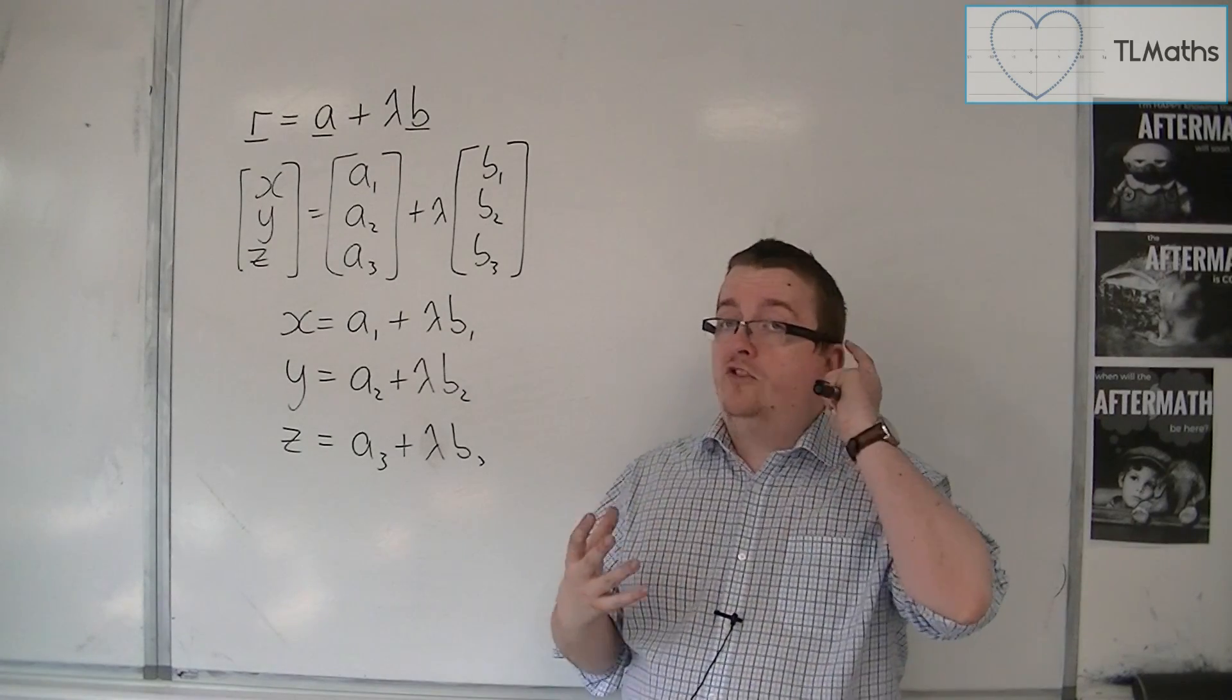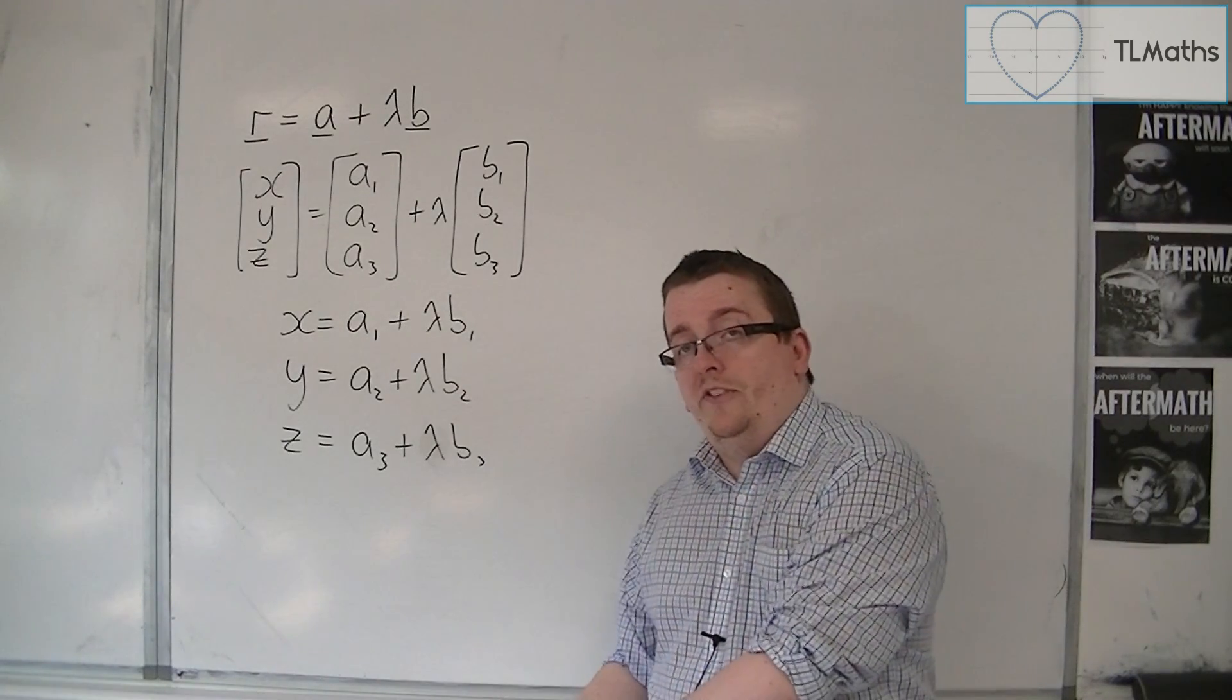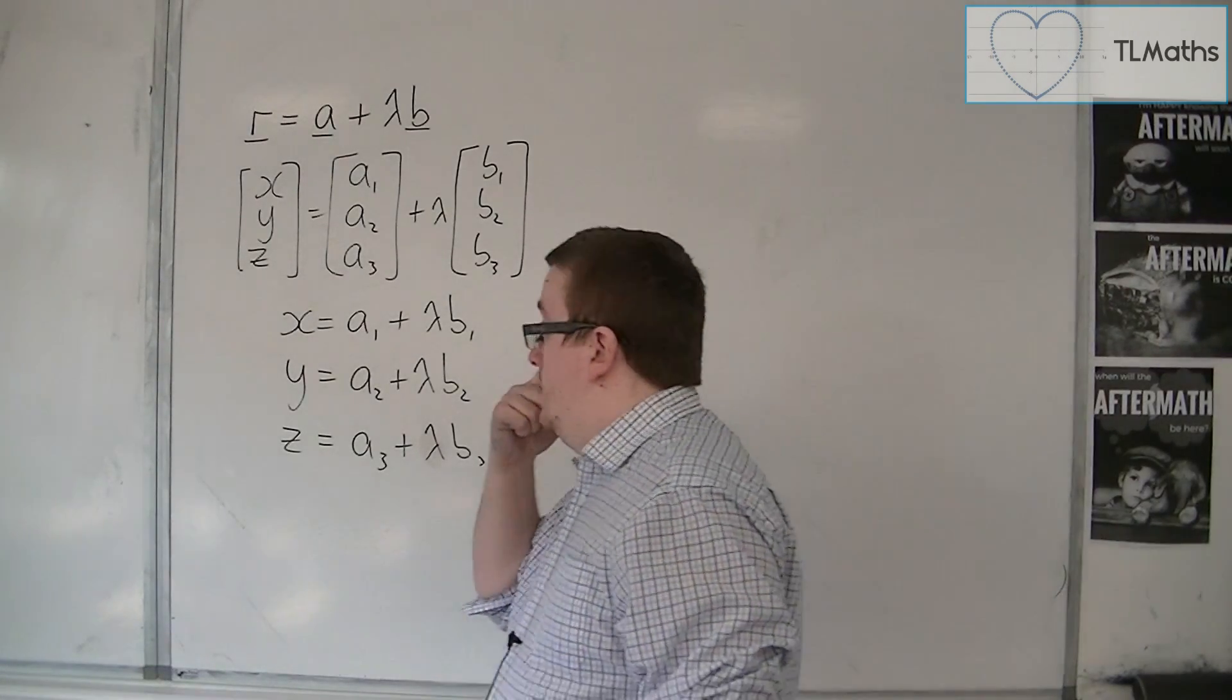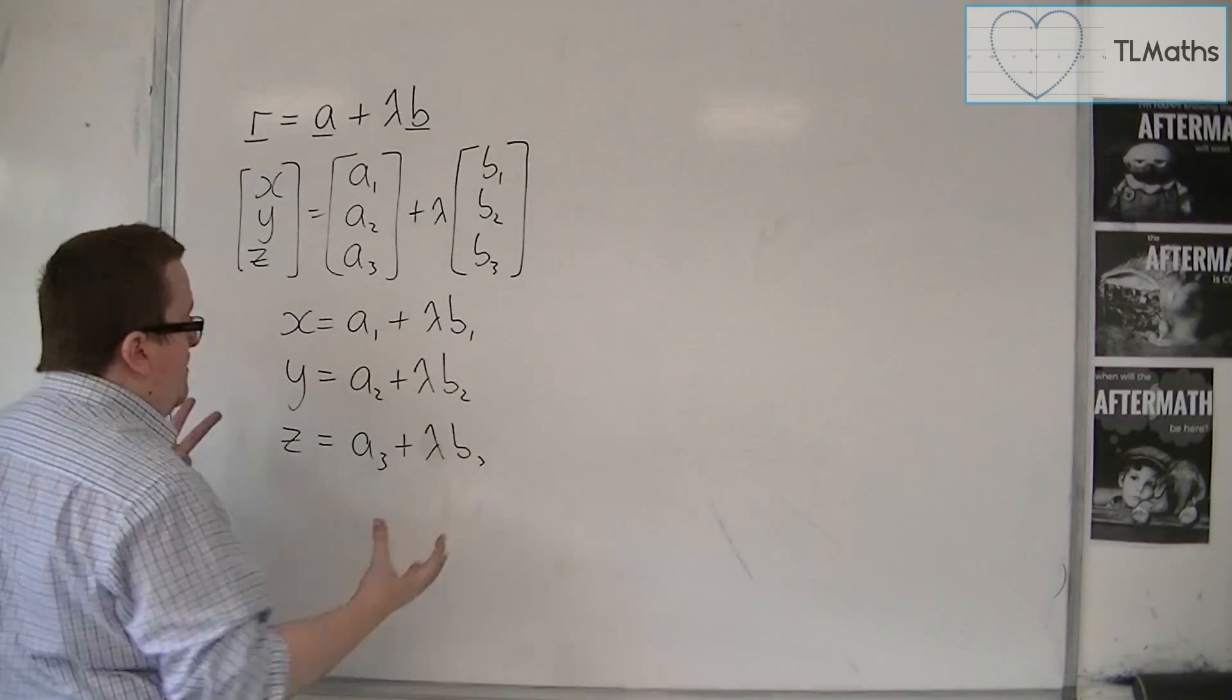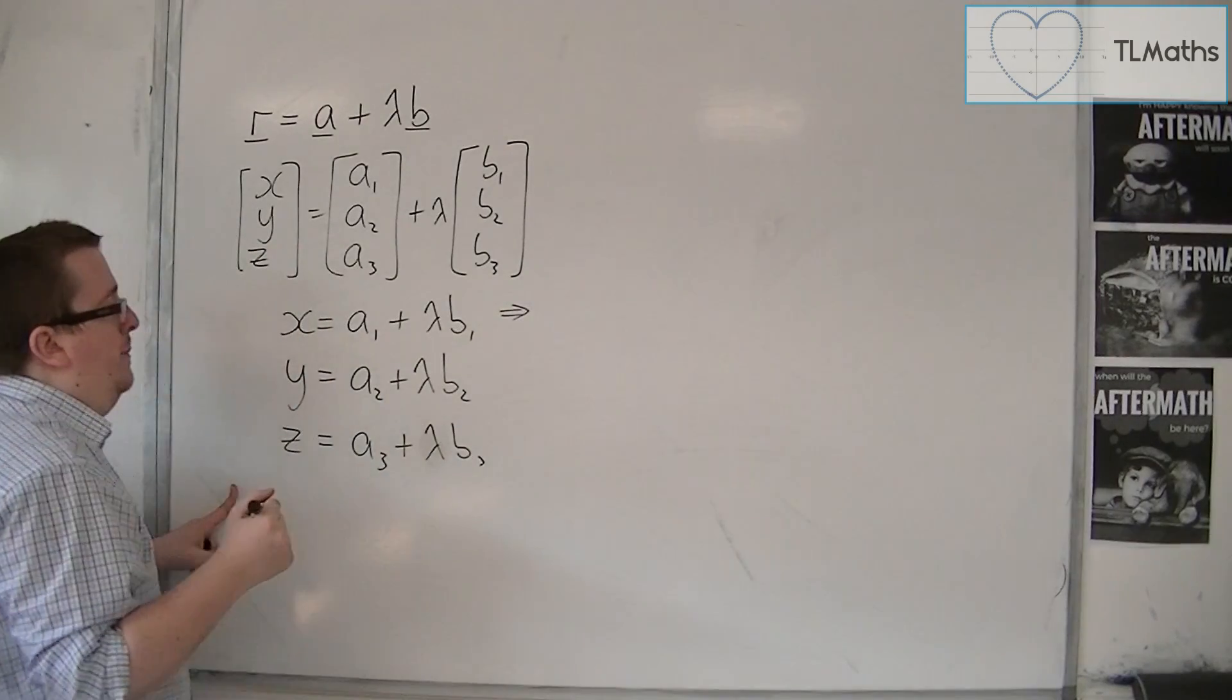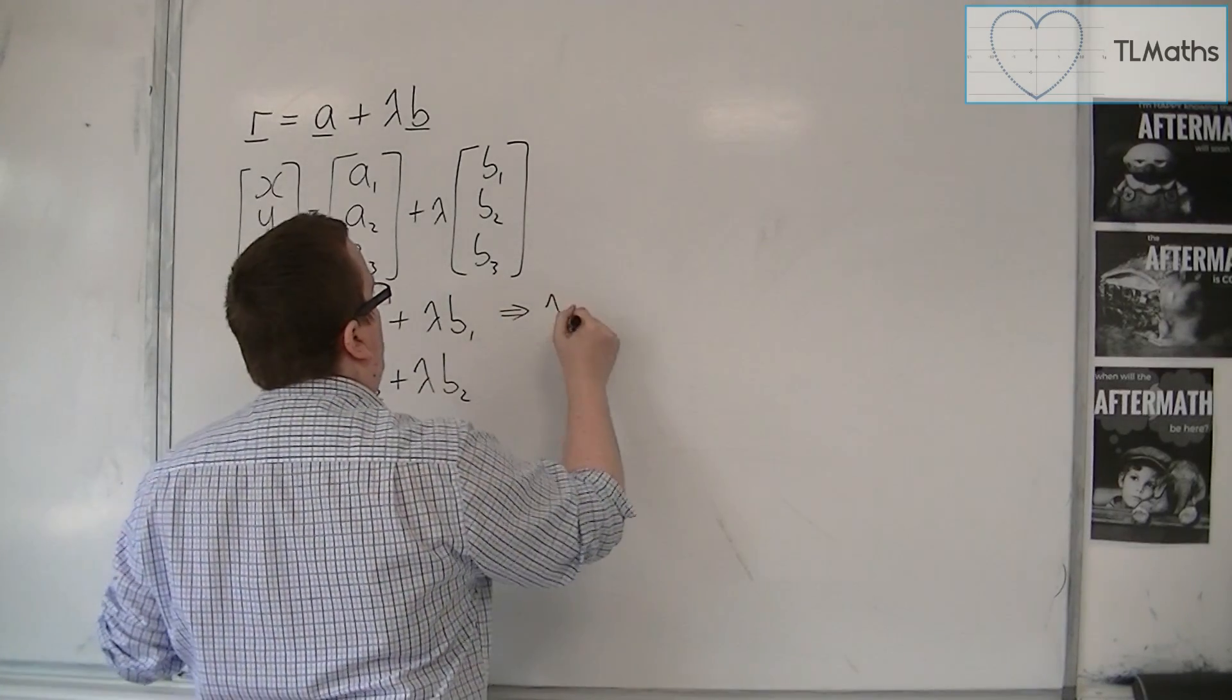So it's like going from two parametric equations to a single Cartesian equation, but this time we're going from three to one. So what I could do is, because each of them has a lambda involved, I could rearrange each of them to get lambda equals.